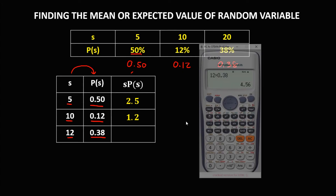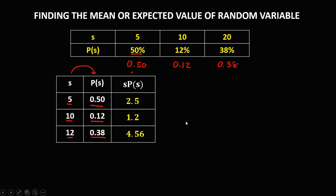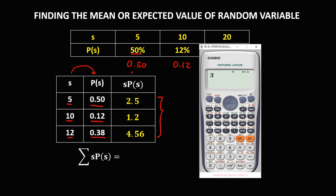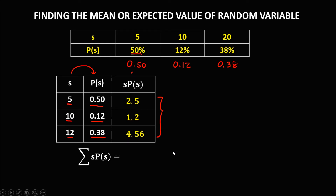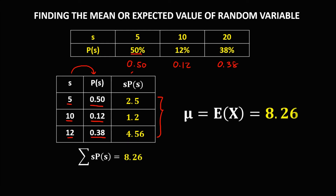Then to find the summation of s times p(s), add all these numbers. So we have 2.5 plus 1.2 plus 4.56 equals — the mean is 8.26. So the mean or the expected value is 8.26.